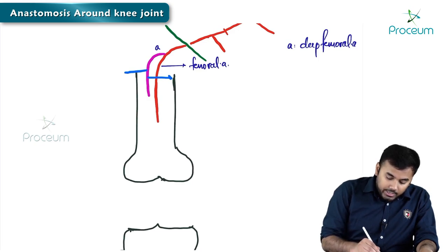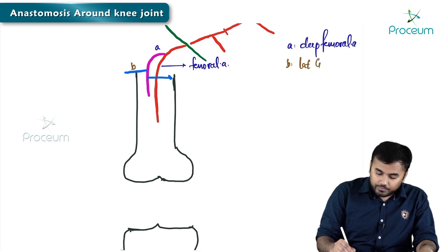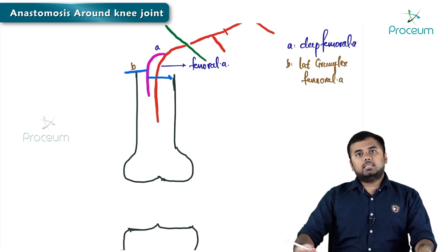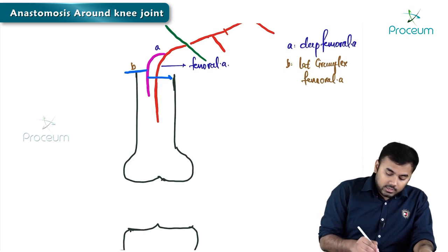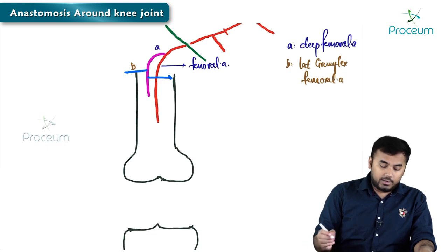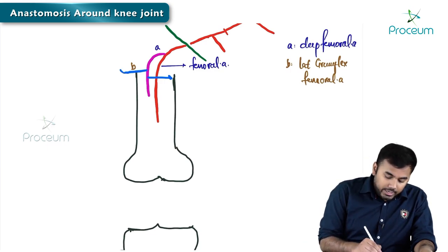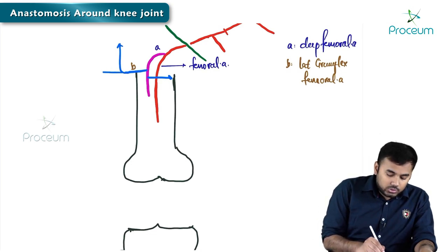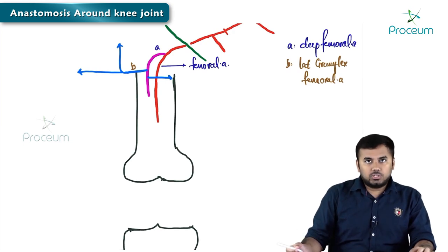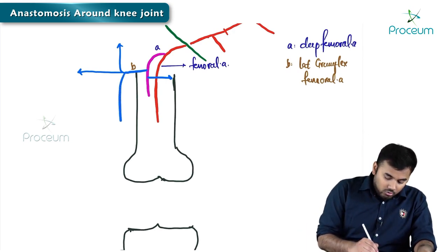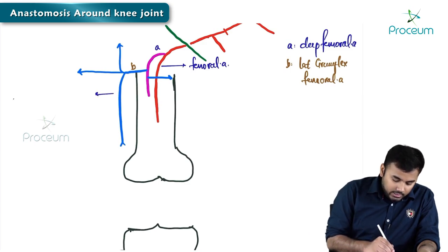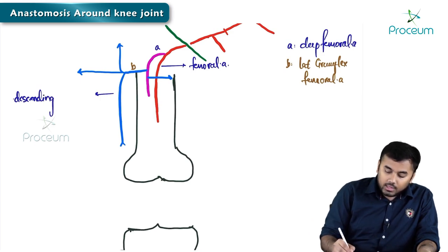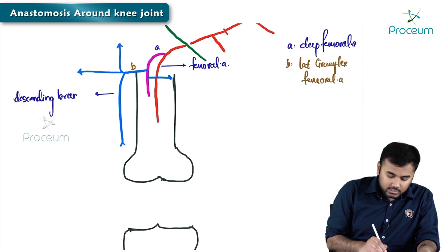B here stands for lateral circumflex femoral artery, and C stands for medial circumflex femoral artery. This lateral circumflex femoral artery arising from the deep femoral artery divides into three branches: one branch goes on the top called the ascending branch, one goes transversely called the transverse or horizontal branch, and one comes down called the descending branch. This descending branch of the lateral circumflex femoral artery — just keep this aside.